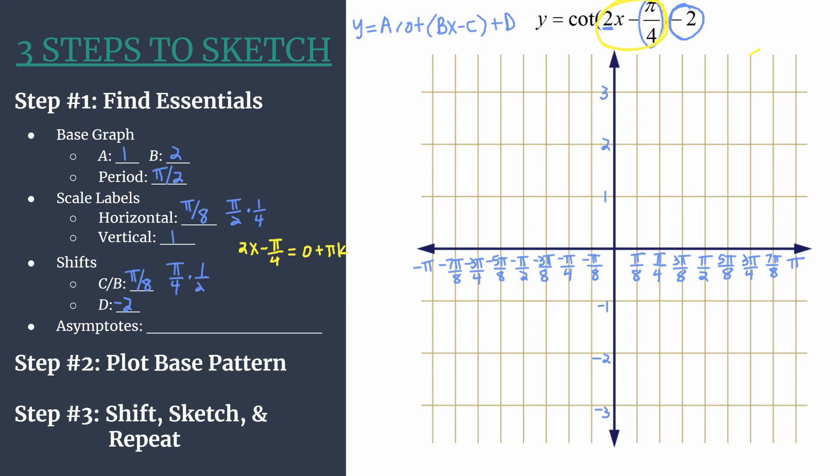Now that we have the setup, just solve for x. Start by first adding π over 4 to both sides. π over 4 only combines with a 0 on the right side because πk is not a like term. It leaves us 2x on the left side equal to π over 4 plus πk. Then we divide everything by 2. So our final asymptotes equation is x equals π over 8—that's π over 4 divided by 2—plus π over 2 k. Notice π over 2 is our period. We should have an asymptote once a period, so that's just another way to check yourself for accuracy.